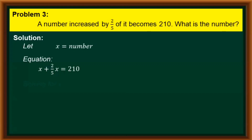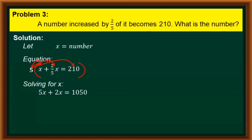We now solve for the value of x. Since our equation involves a fraction, we first eliminate the denominator by multiplying the whole equation by 5. Distributing 5 to each term gives us 5x plus 2x equals 1050. Adding similar terms, 5x plus 2x gives us 7x, which is still equal to 1050.